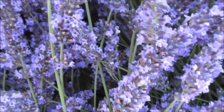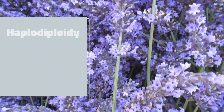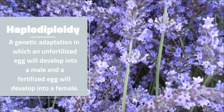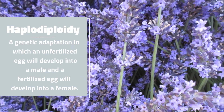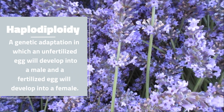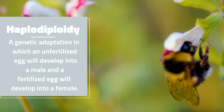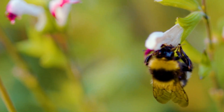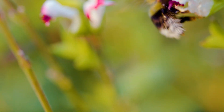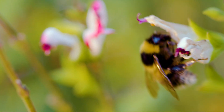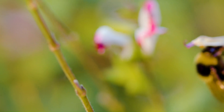About that word mentioned a moment ago — haplodiploidy. Haplodiploidy is a genetic adaptation in which an unfertilized egg will develop into a male and a fertilized egg will develop into a female. This adaptation may not seem like much, but its importance will become more apparent when we cover the evolution of sociality in insects.